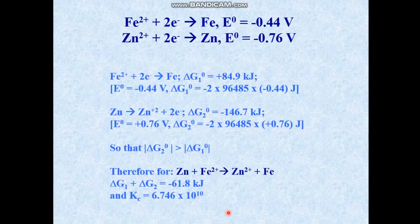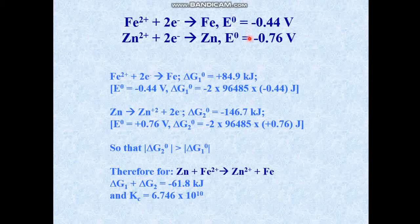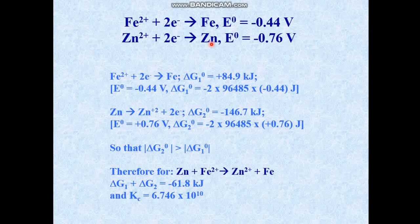Let us take another example: two systems — iron two-plus/iron metal and zinc two-plus/zinc metal. Both redox potential values are negative: iron is −0.44 V and zinc is −0.76 V. The ΔG° values for both reduction reactions are positive, so neither reduction reaction is spontaneous. Both metals — iron and zinc — have the tendency to lose electrons, and the backward (oxidation) reactions occur spontaneously.